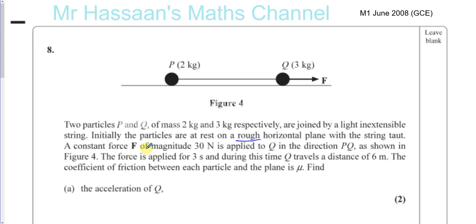A constant force F of magnitude 30 N is applied to Q in the direction PQ as shown in figure 4. The force is applied for 3 seconds, and during this time Q travels a distance of 6 metres. The coefficient of friction between each particle and the plane is mu.